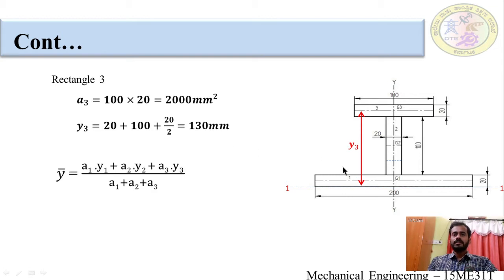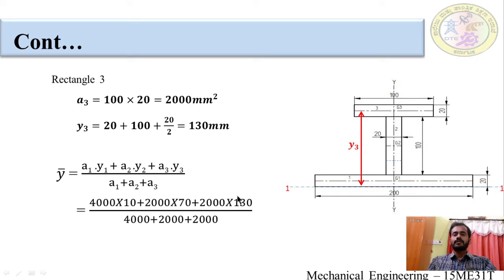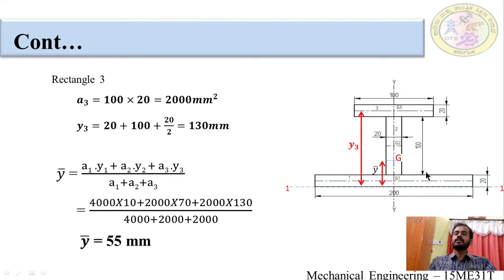Now we calculate the center of gravity for the whole section. y-bar is measured from reference axis 1-1 using the equation: y-bar = (A1·y1 + A2·y2 + A3·y3) ÷ (A1 + A2 + A3). Substituting all values, y-bar = 55 millimeters. This is the distance from reference axis 1-1 to the center of gravity G of the I-section, which lies on the YY axis.